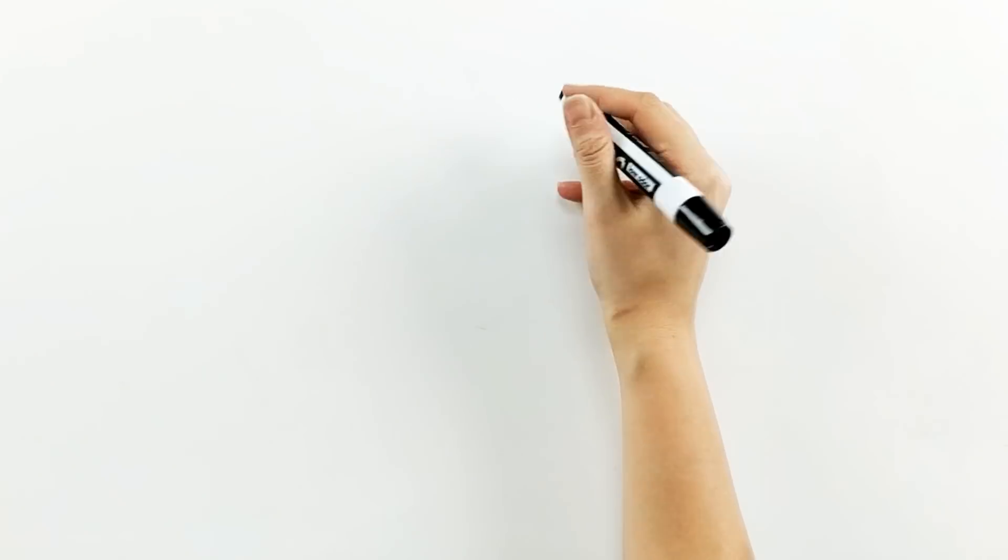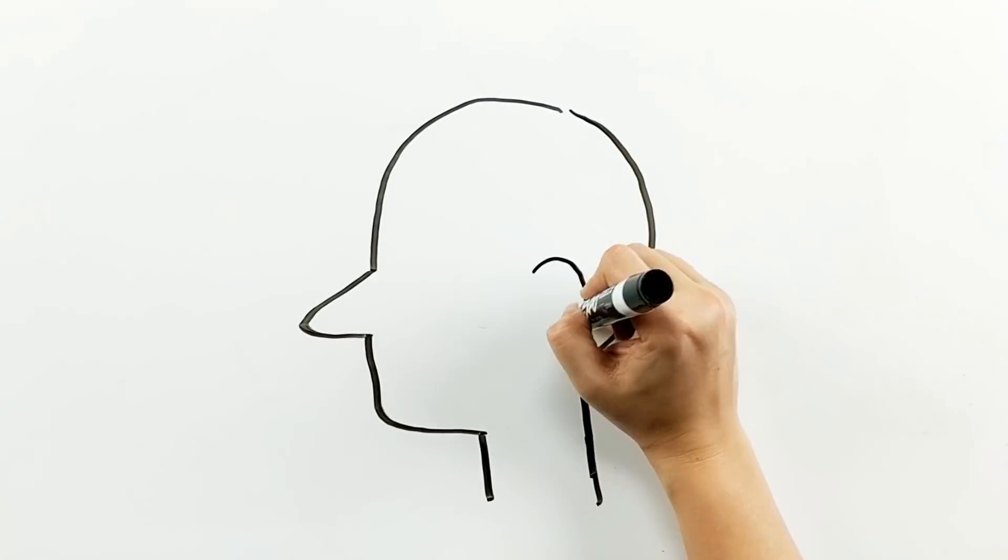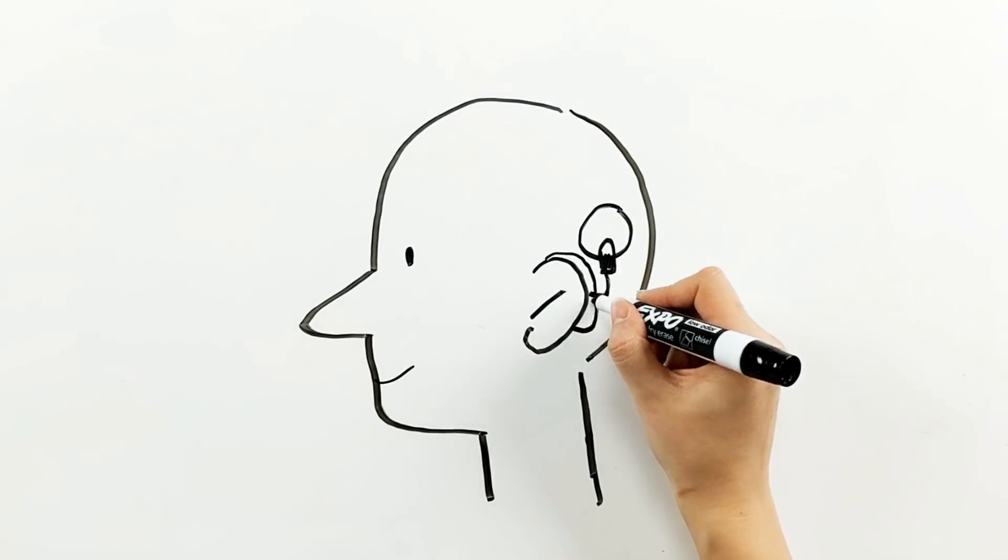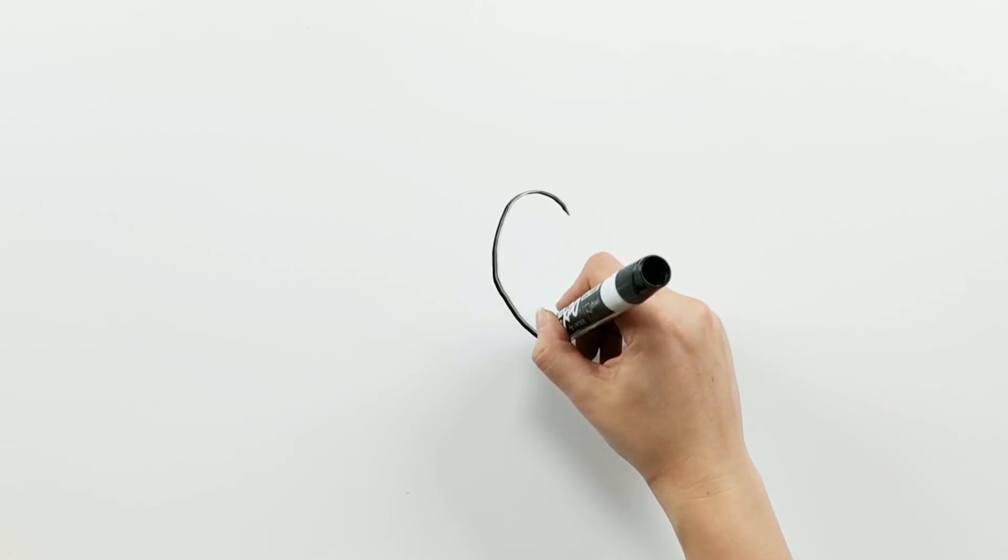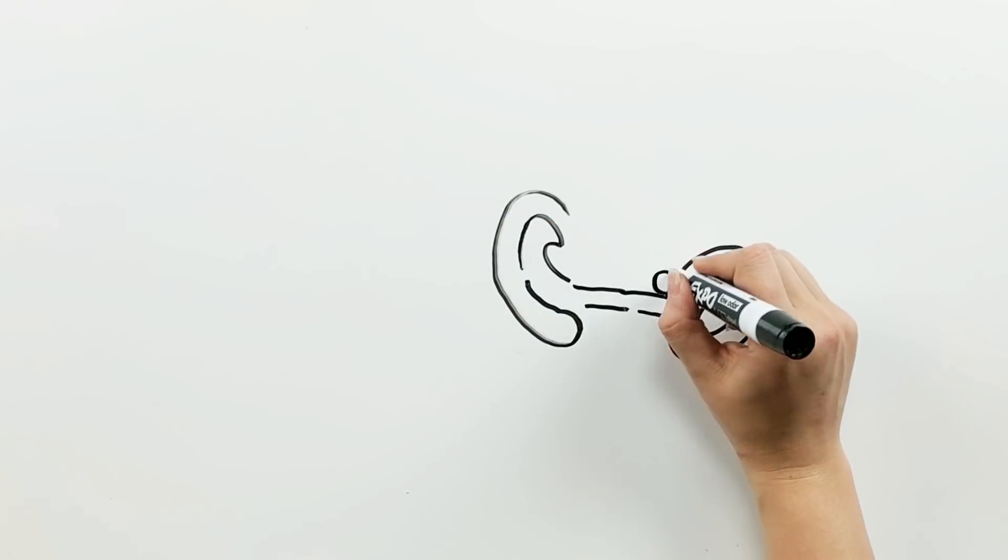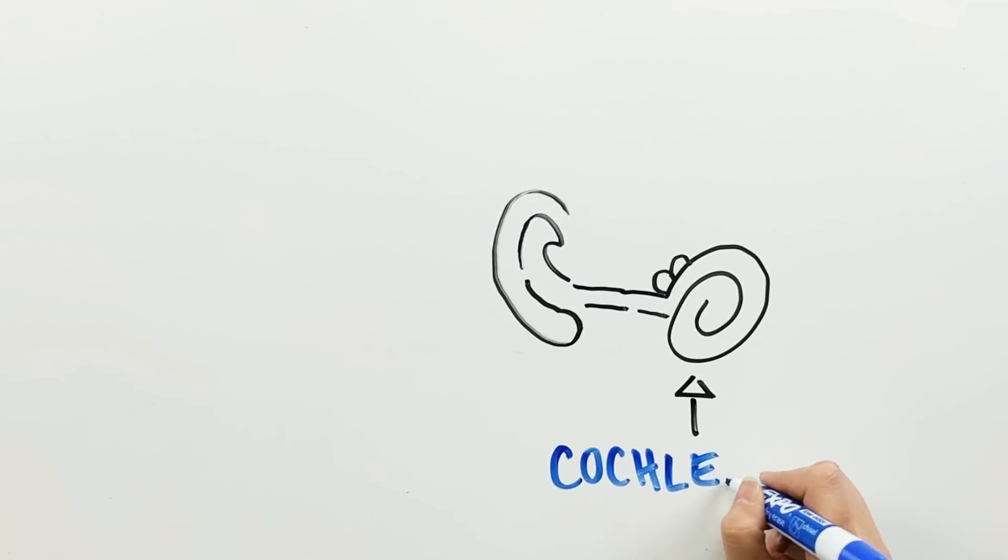Cochlear implants are devices that are placed in the inner ear of individuals who are deaf to help them regain lost hearing. The cochlea is that part of the inner ear that takes in sound vibrations and converts them into electrical signals that are interpreted by the brain as sounds, for example the sounds of oral speech.